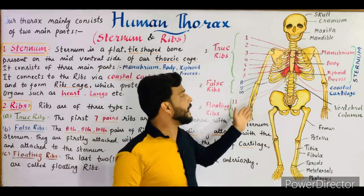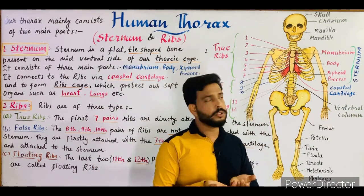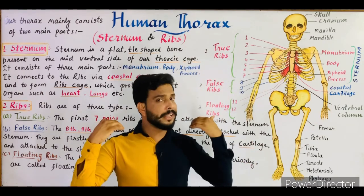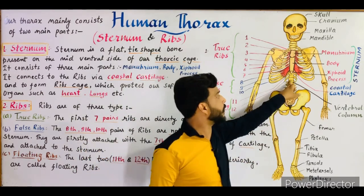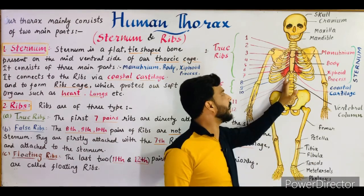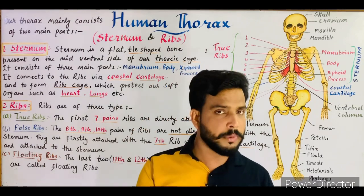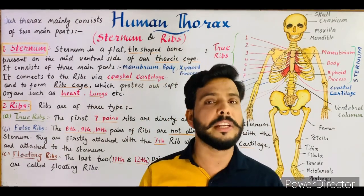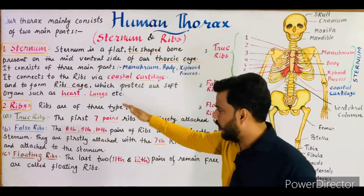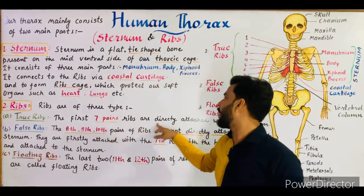The last two pairs — pairs eleven and twelve — are known as floating ribs. These ribs never attach with the sternum. From the back side they are connected with the vertebral column, but on the anterior side they are not connected to the sternum. Those ribs which do not connect with the sternum are termed floating ribs; they remain in a floating condition.